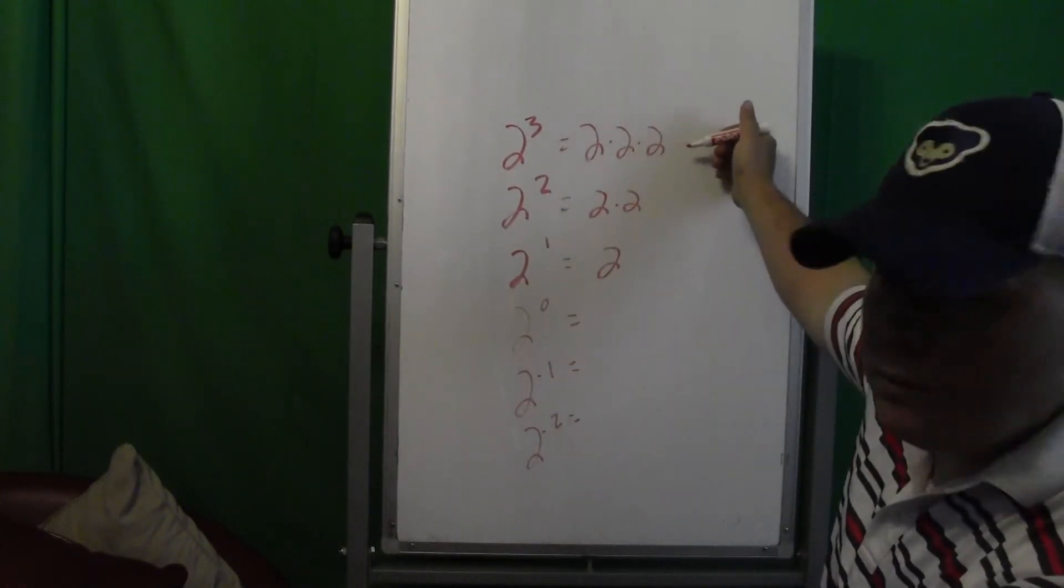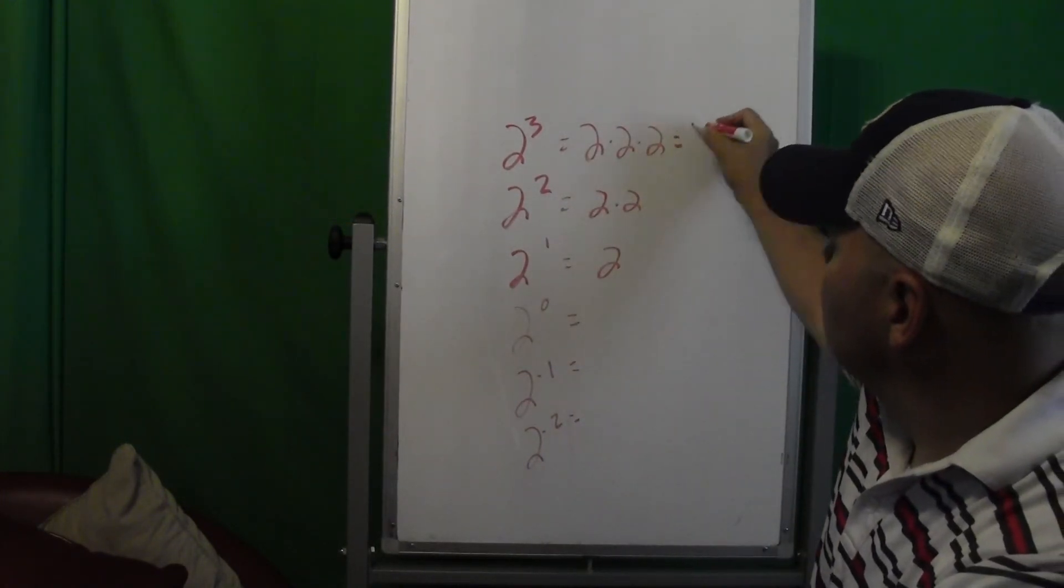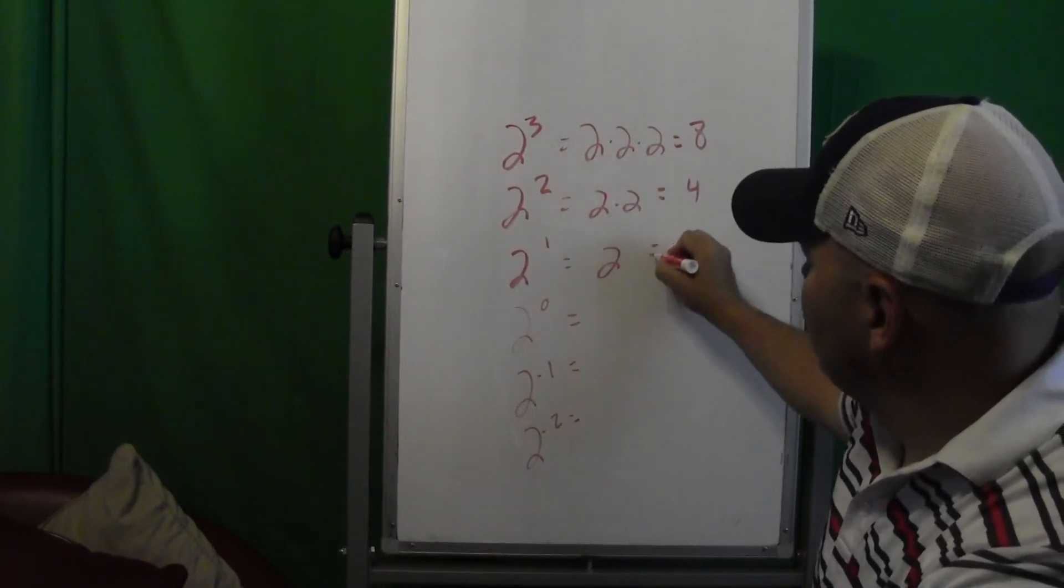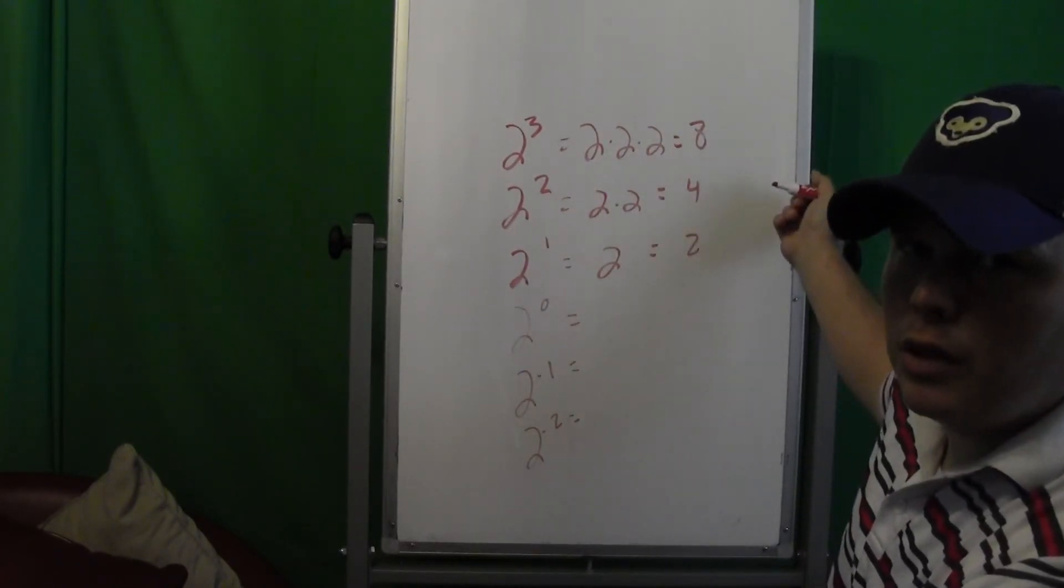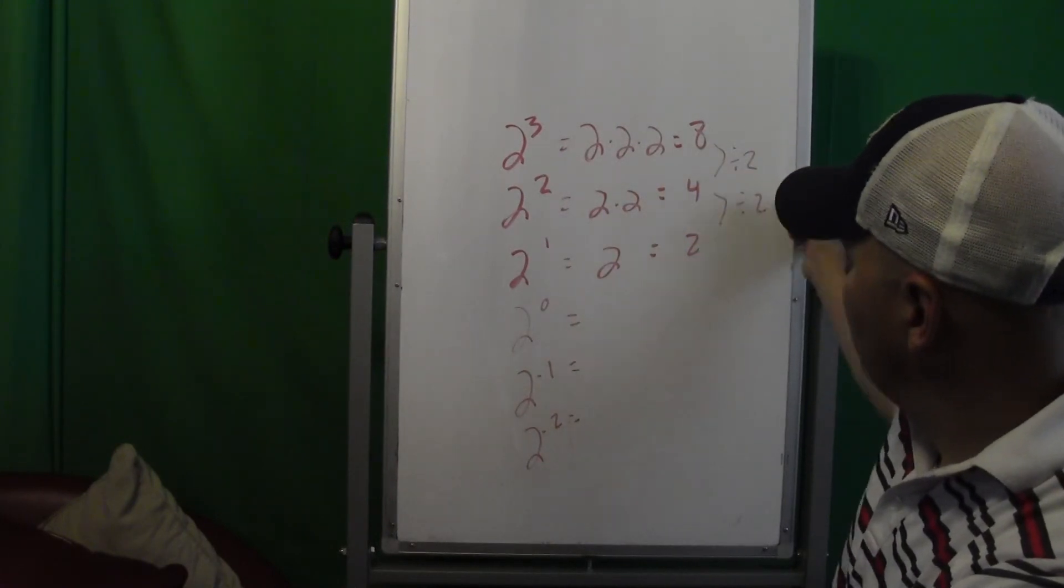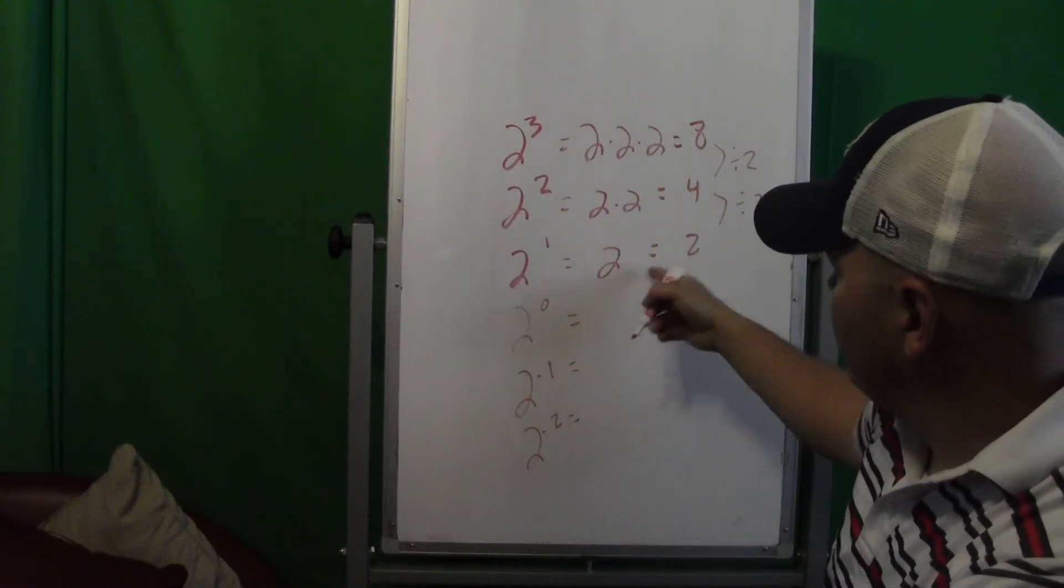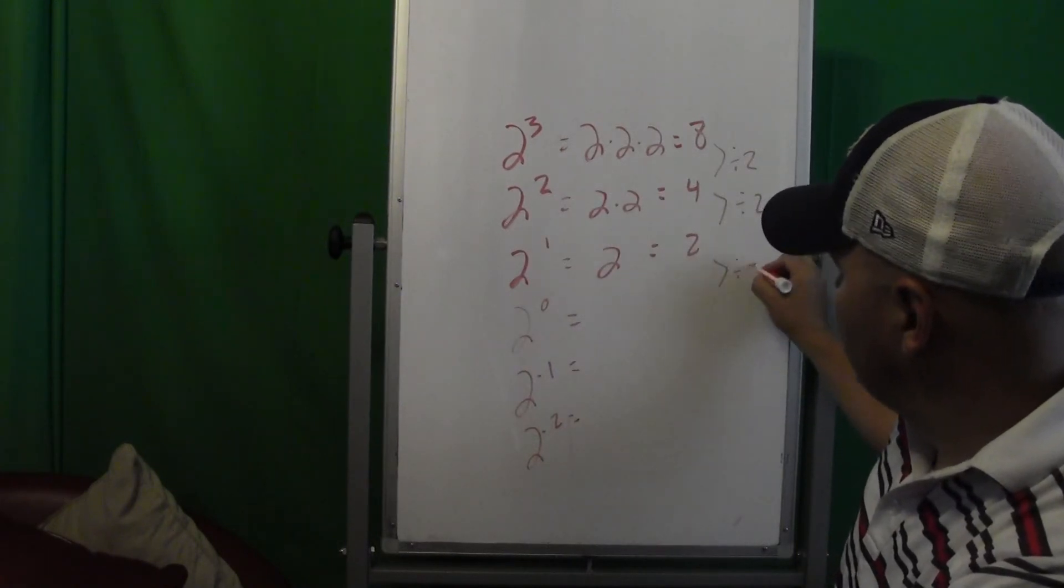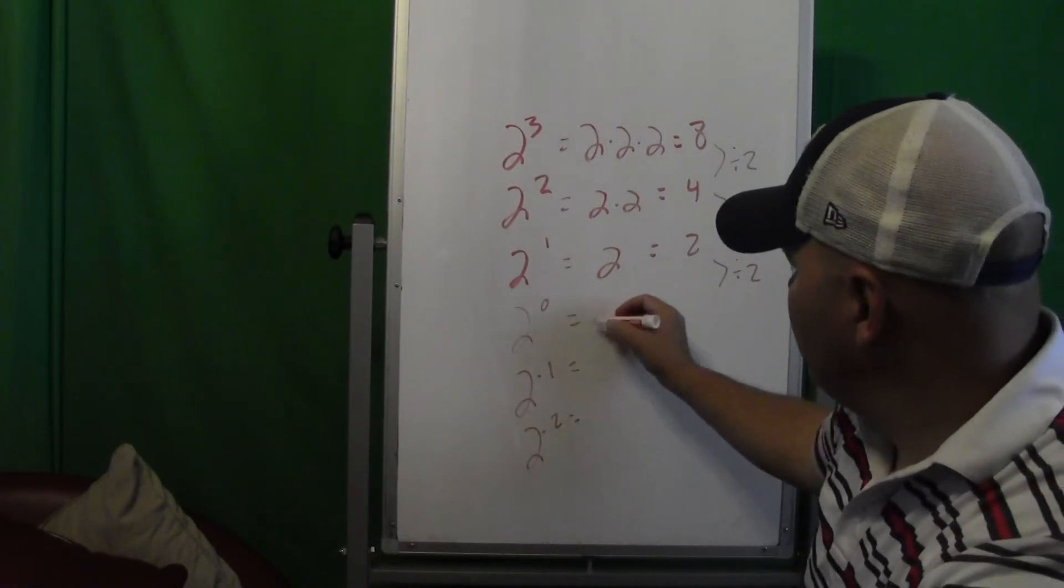All I'm doing is this is going to be 8, that's going to be 4, that's going to be 2. So if I'm looking at my patterns here, this is just dividing by 2 every time. So then when I go from 2 to the first, when I divide by 2 to get 2 to the 0, I would get 2 divided by 2 which is 1.